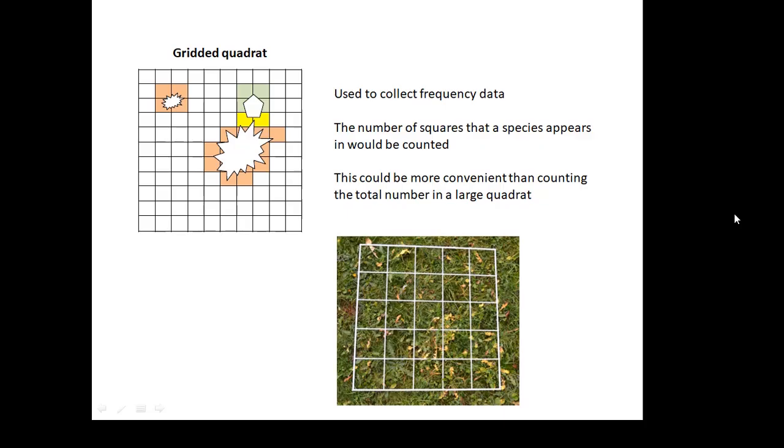And when would you do that? You'd possibly do that if there's lots and lots and lots of daisies. Even within a quadrat, there might be kind of 200 daisies. And it's just not practical counting them all. So what you would do is just say how many of the little squares have got a daisy in. And that's a quicker way of doing it.